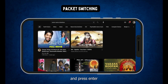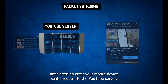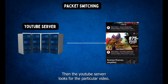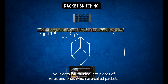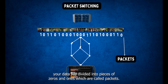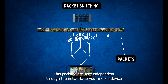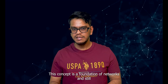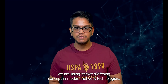When you want to watch any YouTube video, you simply type into your search bar and press Enter. After pressing Enter, your mobile device sends a request to the YouTube server. The server looks for the particular video, and once found, the data is divided into a series of zeros and ones called packets. These packets are sent independently through the network to your mobile device and reassembled according to their sequence number. This concept is the foundation of networks and we still use packet switching in modern network technologies.